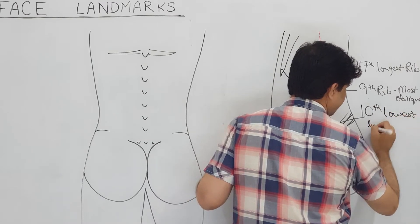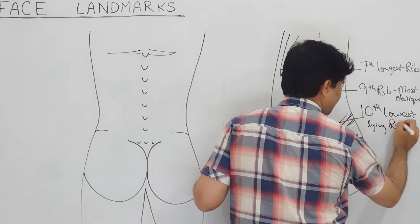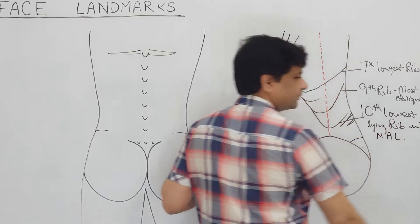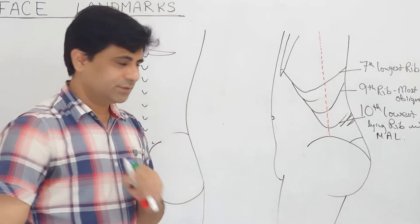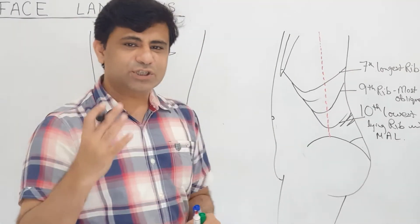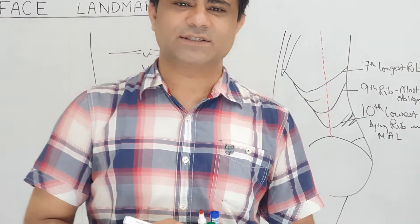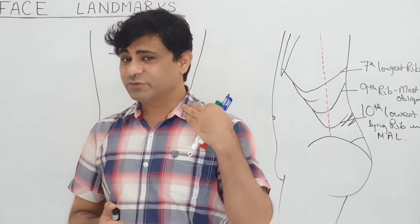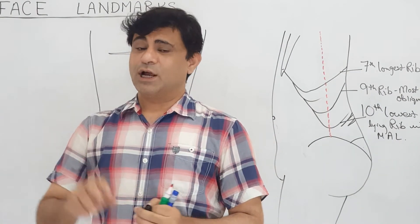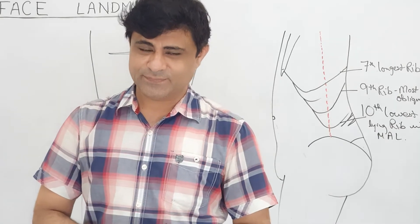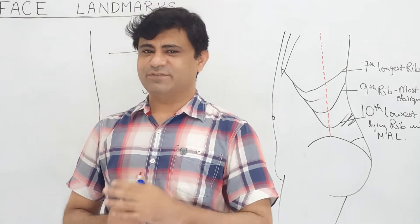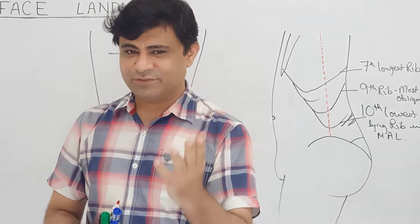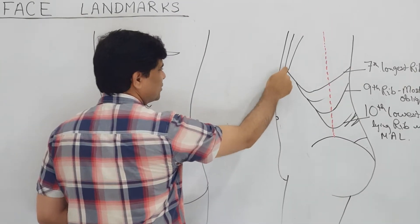The lowest lying rib in the mid-axillary line is the tenth. The shortest rib is the first rib. The most curved rib is again the first rib. The horizontally placed rib is the first rib. The first rib's joint is the Luschka sternal joint.